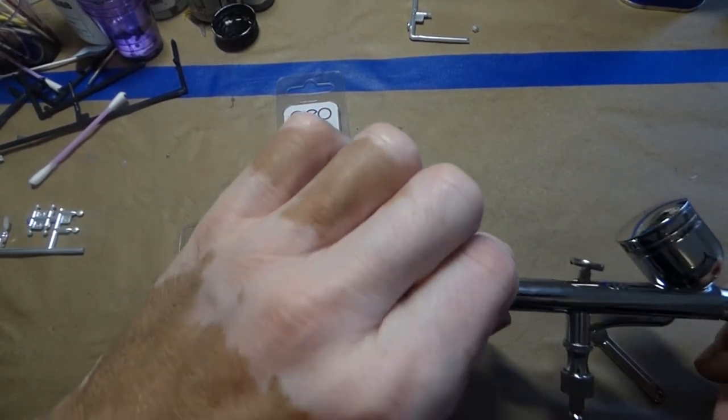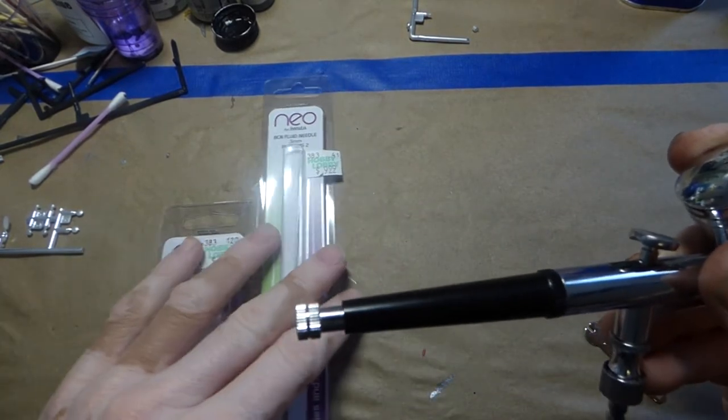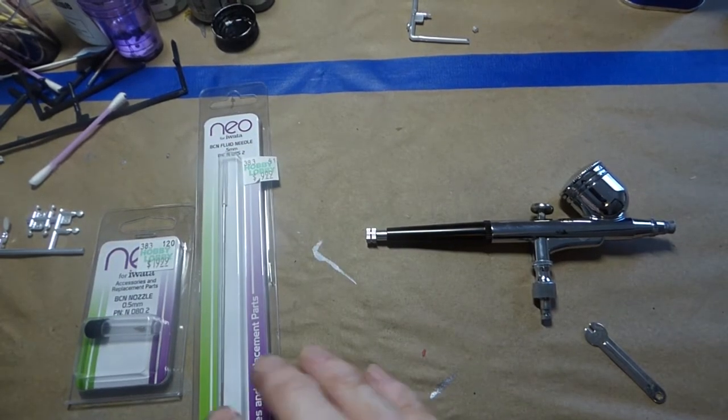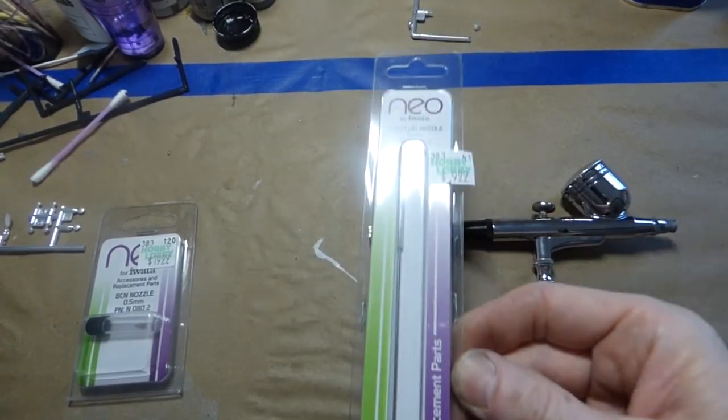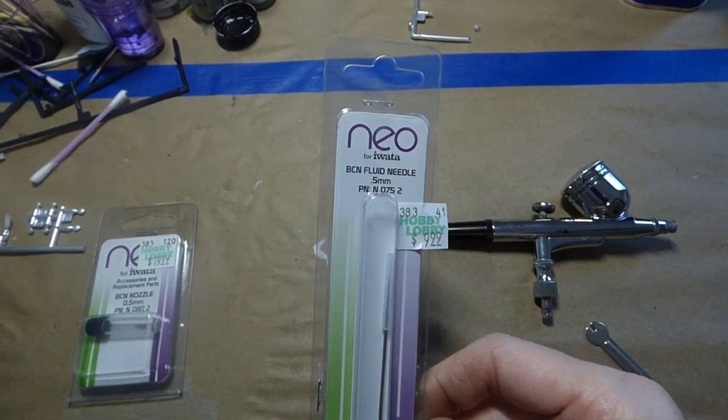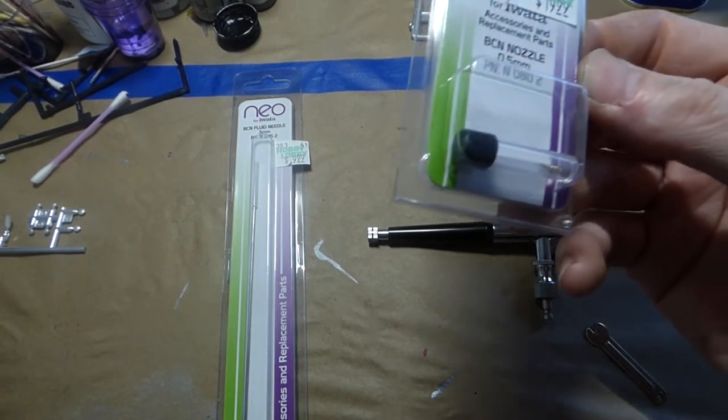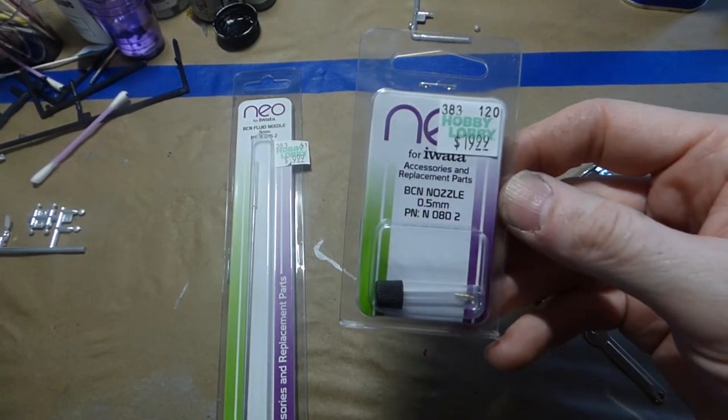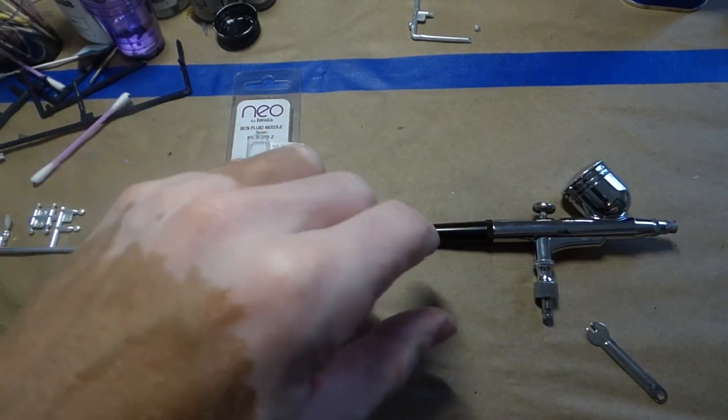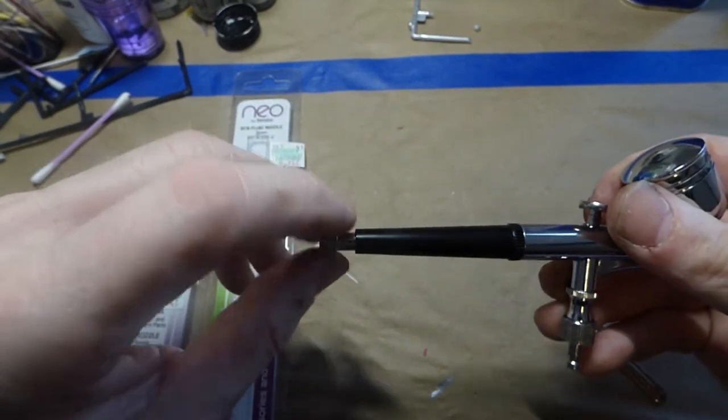The box has a 0.3 millimeter needle in it, so I needed to get something larger. I went down to Hobby Lobby and bought both a 0.5 millimeter needle for the Iwata Neo CN and the corresponding 0.5 millimeter nozzle. You can see the nozzle was 20 bucks and the needle was 10. More than I'd like to spend, but sometimes that's what you need to do.